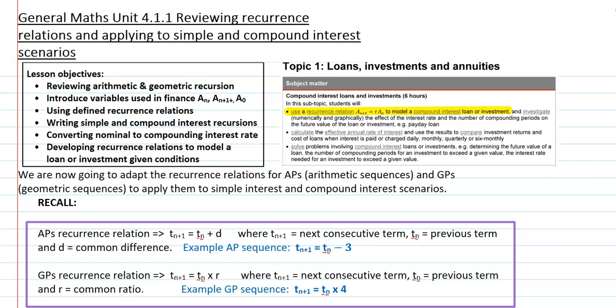Hi, my name is Louise Thwait and today we're starting Unit 4 for Year 12 General Maths. Today we're looking at reviewing recurrence relations and applying that to simple and compound interest scenarios.